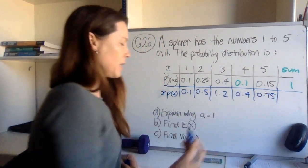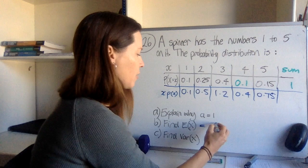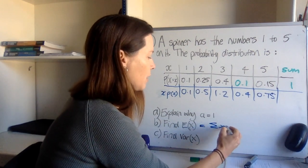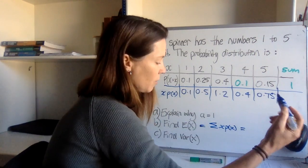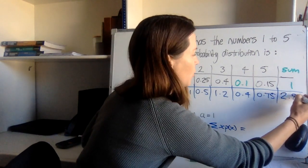And then we add all of these together because remember the expected value of x is the sum of each score multiplied by its probability. And when we add all those up, we get 2.95.